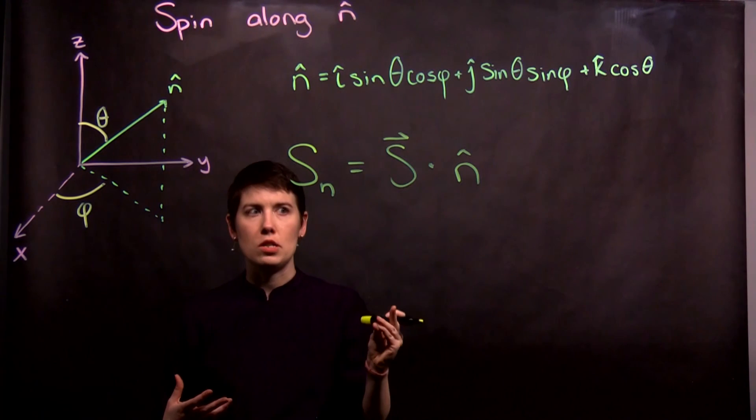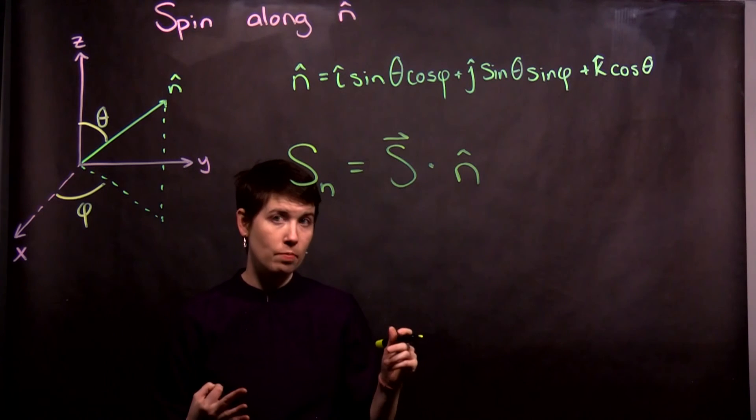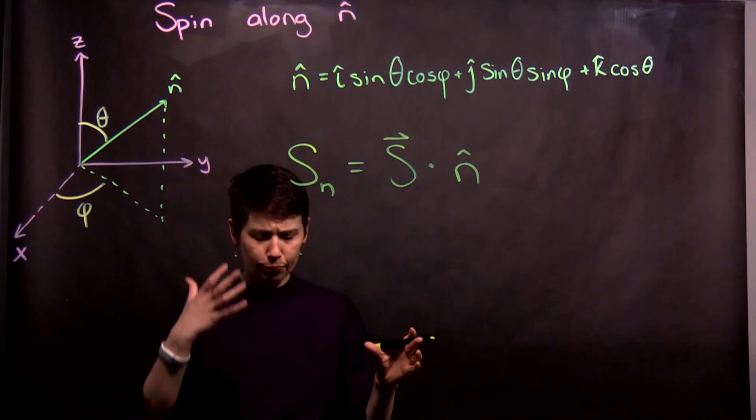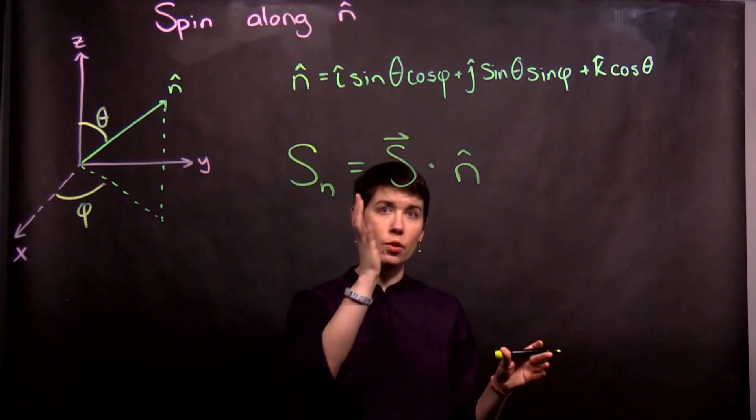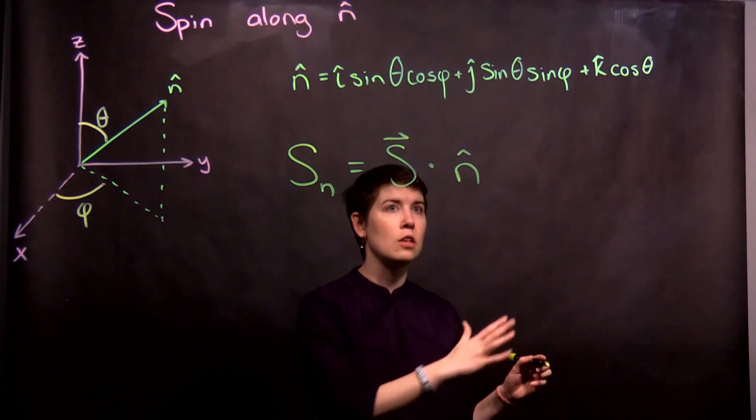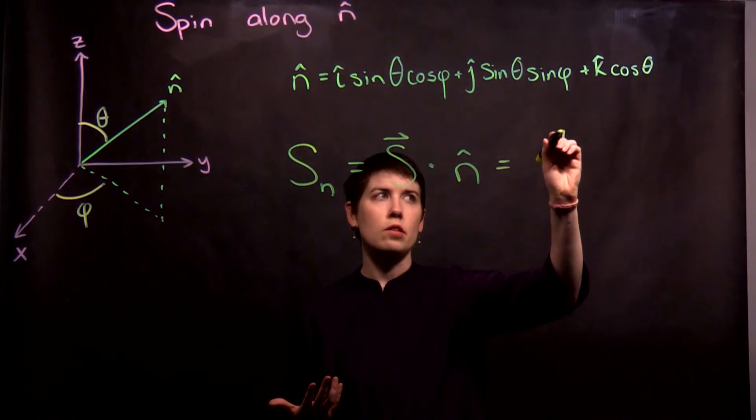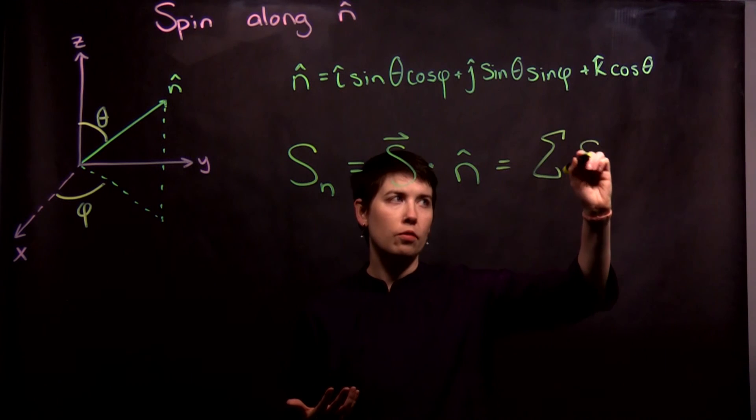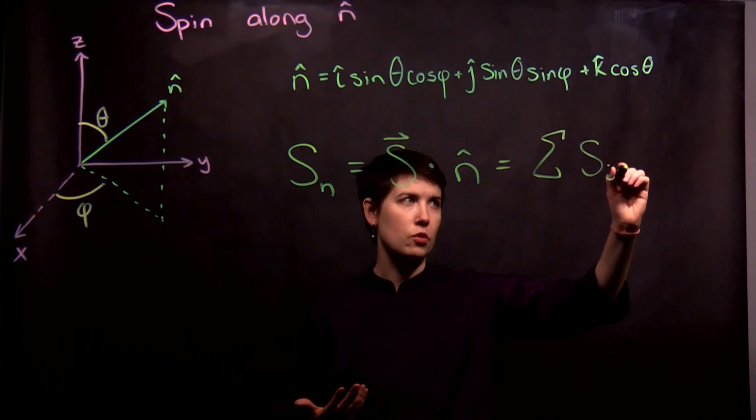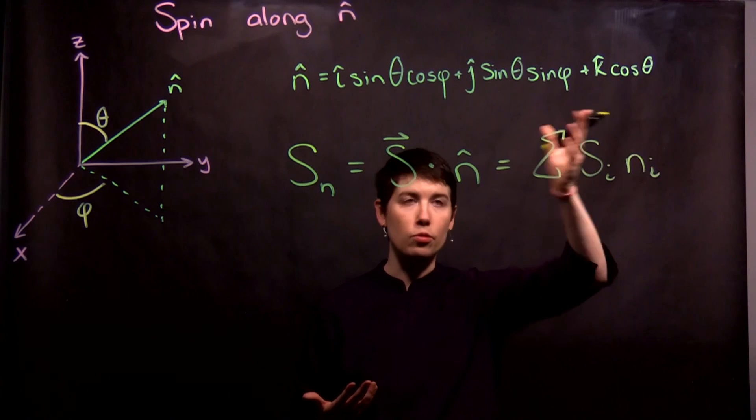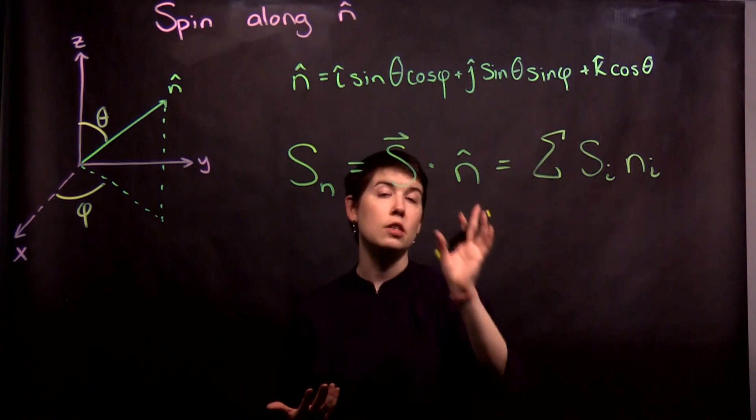And we can actually think about this as our three spin matrices, and then, so representing x, y, and z. So we can even write this as, for instance, a sum of s_i, where these are our spin matrices, n_i, where those are our three directions, so just an inner product.